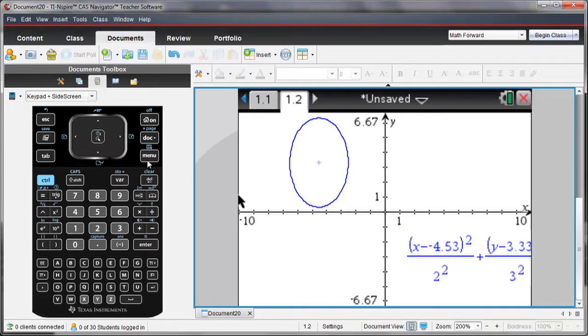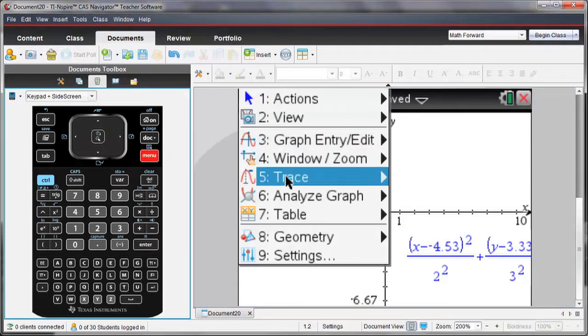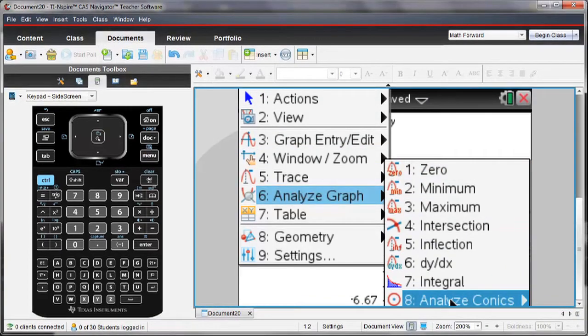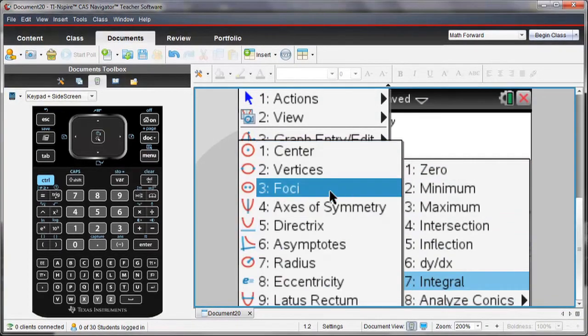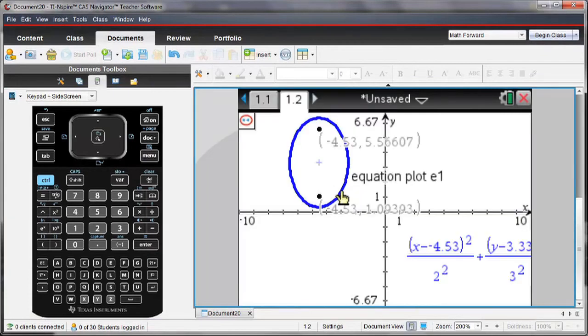I can also analyze properties of this ellipse by selecting Menu and analyzing the conics. I'm going to go ahead and find the foci. So I select the ellipse, and the values of the foci appear on the screen.